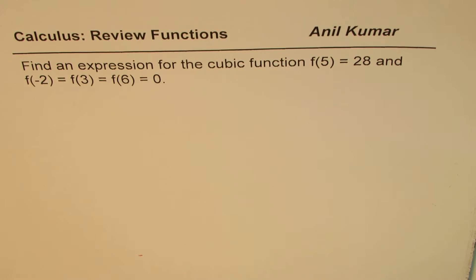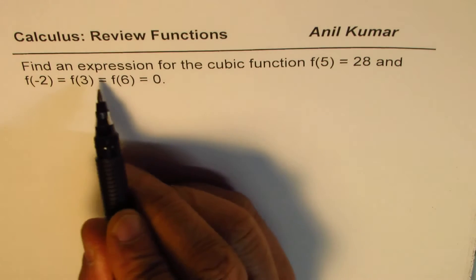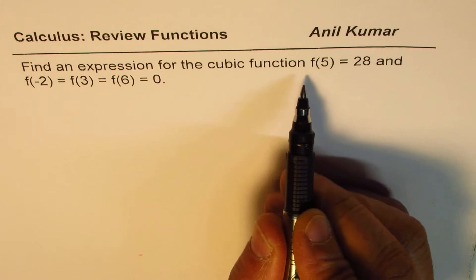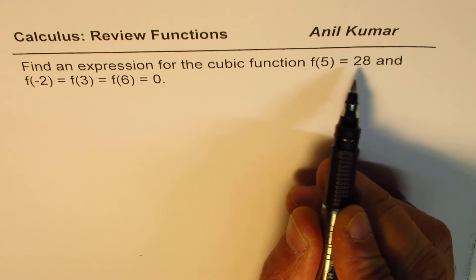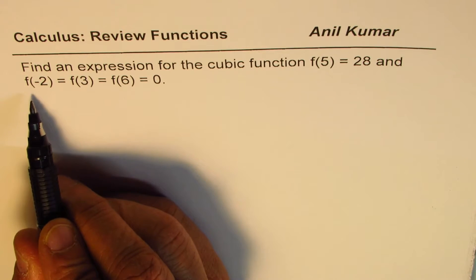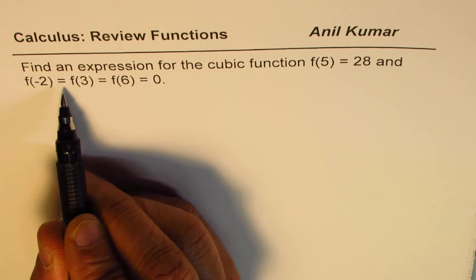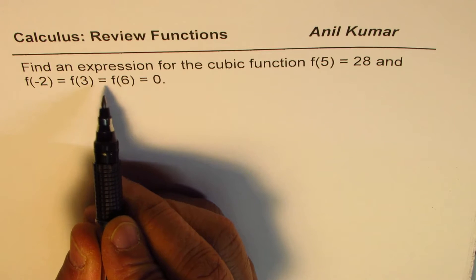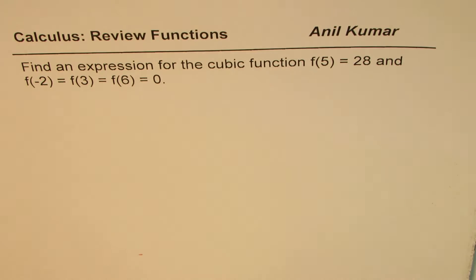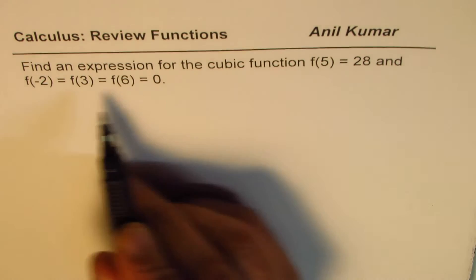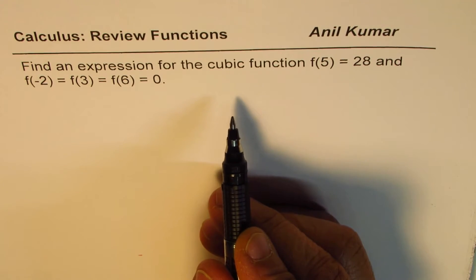This video is very important for those who are just joining university or taking calculus after a break. The question here is find an expression for the cubic function where f(5) equals 28 and f(-2) equals f(3) equals f(6) equals 0. So you need to find a cubic function with all that given information.